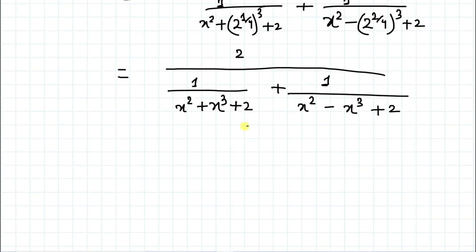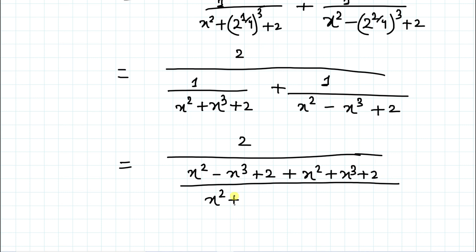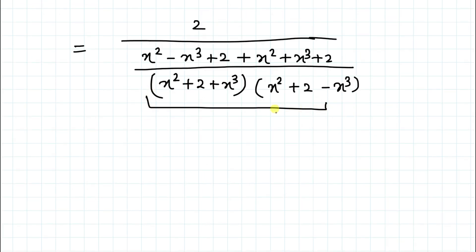Now taking the LCM, we have 2 divided by (x² − x³ + 2)(x² + x³ + 2) in the denominator. We multiply: (x² + 2 + x³) with (x² + 2 − x³). In the denominator part we apply the algebraic identity (a+b)(a−b) = a² − b².